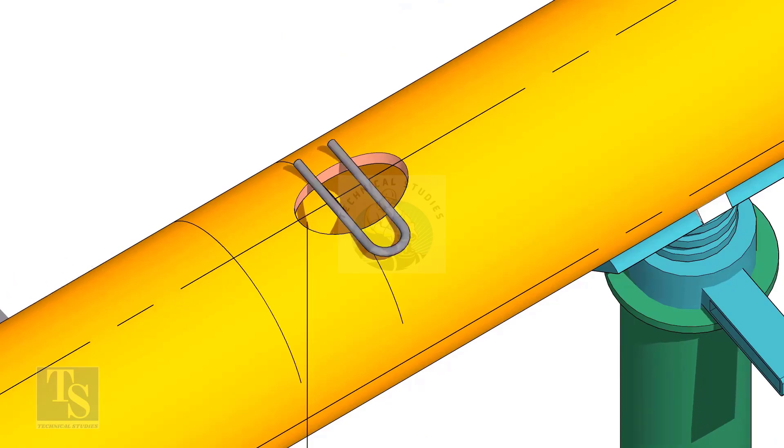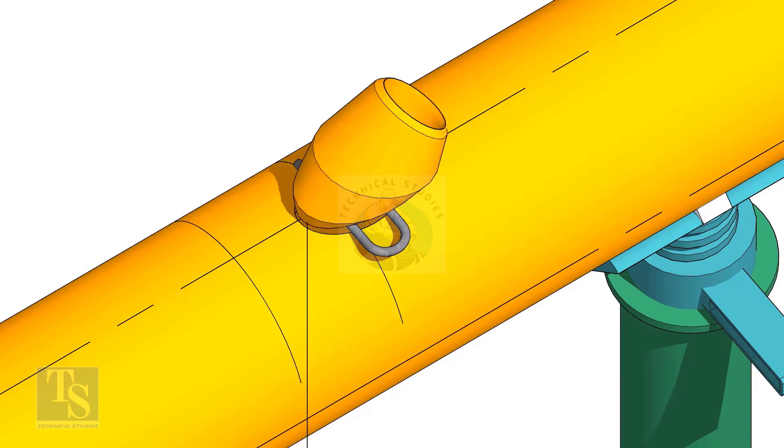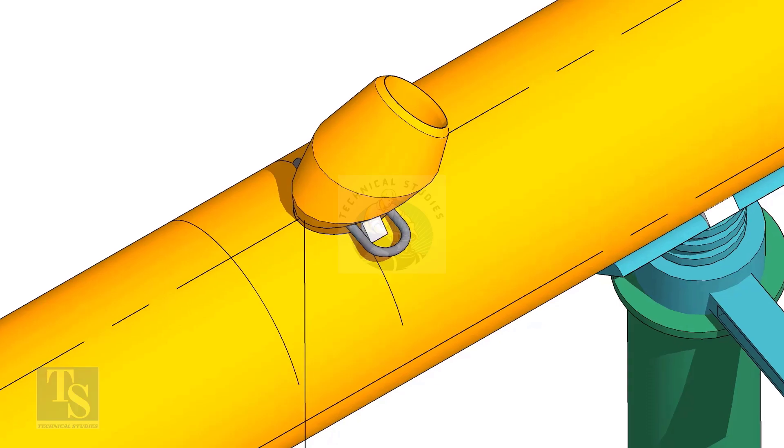Cut and clean the opening on the header. Put the lateralette on the center of the hole. Tack weld on one side.